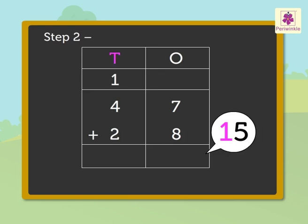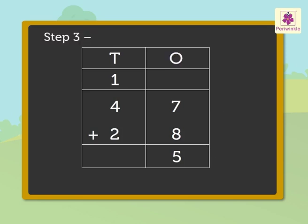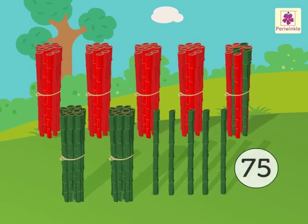Carry the one-ten to the tens column and write five in the ones column. Step 3: Add the tens, that is, one plus four plus two is equal to seven. Write seven under the tens column. So, we got the answer as seventy-five. Forty-seven plus twenty-eight is equal to seventy-five. Thus, there are seventy-five bamboo sticks in all.